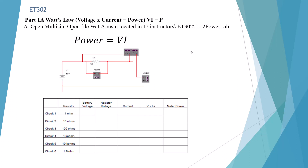Our battery voltage is going to be 10 volts. Our resistor voltage is 10 volts — since we only have one resistor, it's going to use up all the voltage. Our current is going to be 10 volts divided by 1 ohm, which is 10 amps. Voltage times current is 10 times 10, which is 100 watts. And we're going to confirm that in Multisim with our meter.